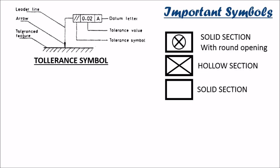Coming up to the sections. The solid section with a round opening is represented as solid section with a circle in a cross and hollow sections with diagonal bars. And solid section is represented as simple plain figure.